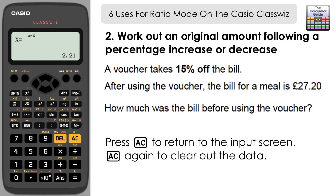The second use is working out an original amount where a percentage has been added or taken off, and we have the reduced or increased price and want to find the original cost. A voucher takes 15% off the bill; after using it the bill is £27.20. How much was the bill before the voucher? Press AC to go back to the input screen and reset.